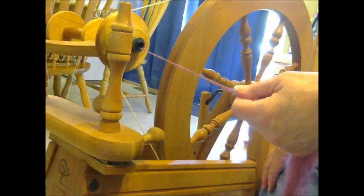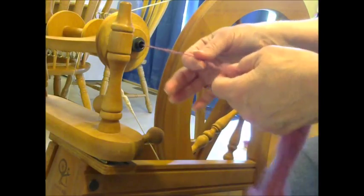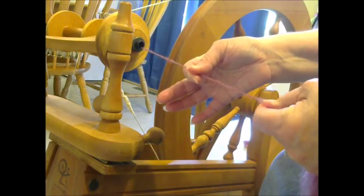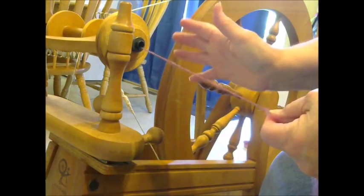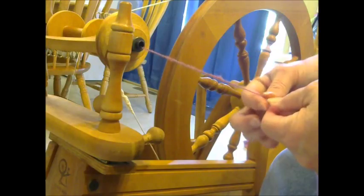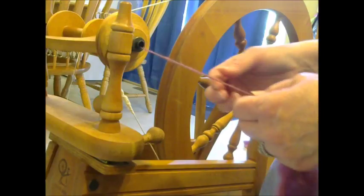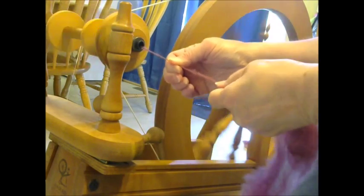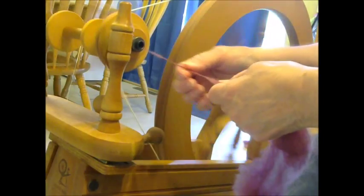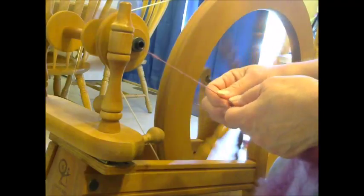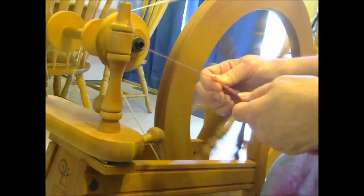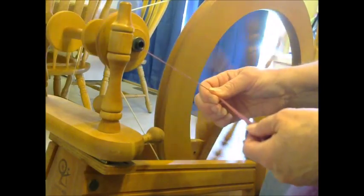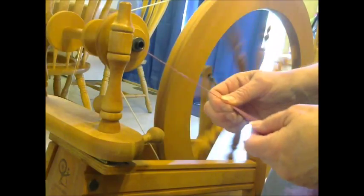So that's the short draw. Then there is the short backward draw. Now that is the one that I tend to use the most. What it is, is I am pulling the fiber apart between my back finger and my front finger. I'm pulling it out thin, letting a twist build up, then I release this hand and the twist goes to the back, and then that feeds into the bobbin, and I move to the next. Let me demonstrate that for you. Now I am doing this at a much slower pace, so it's a little more difficult to spin than if I was going at full speed.